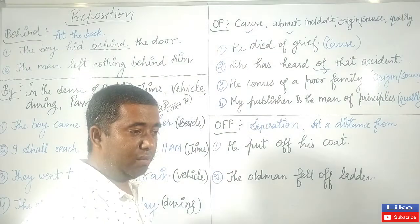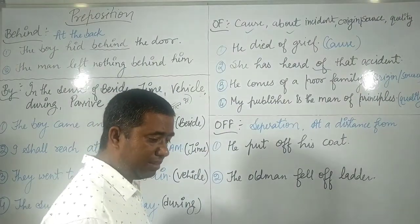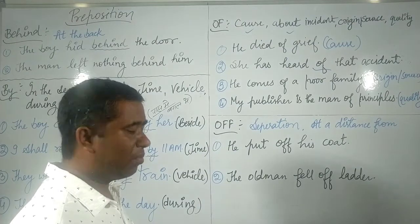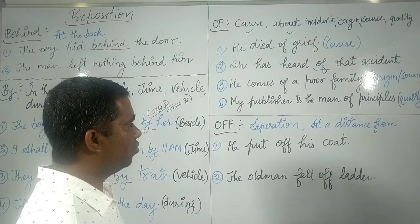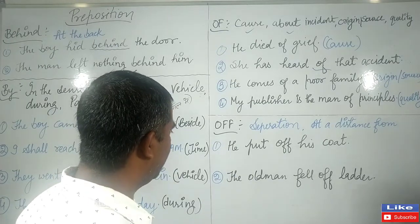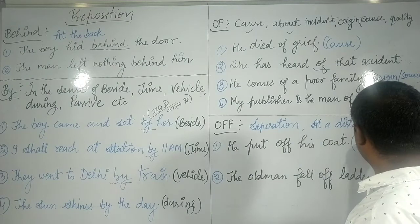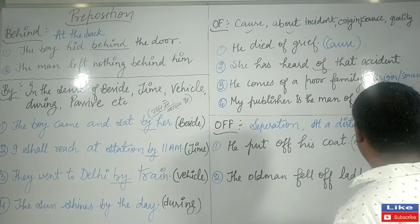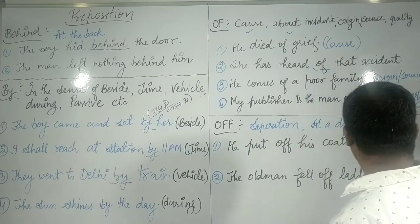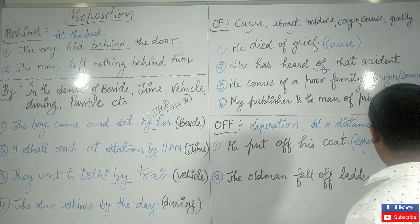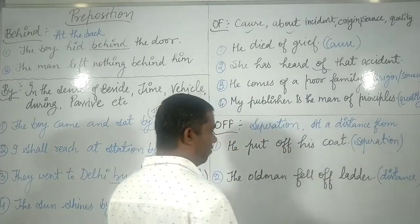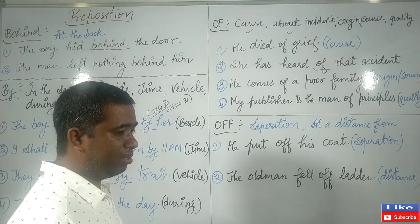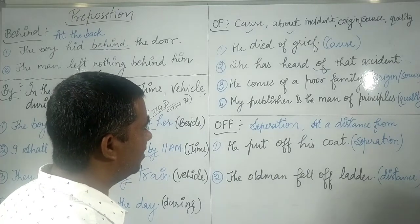Now, many people get confused between 'of' and 'off.' The preposition 'of' has many uses while 'off' has more limited uses. The first use of 'off' is separation — meaning to separate one thing from another. For example: he put off his coat. The second use is 'at a distance from': the old man fell off the ladder — meaning he fell away from the ladder, at a distance from it.